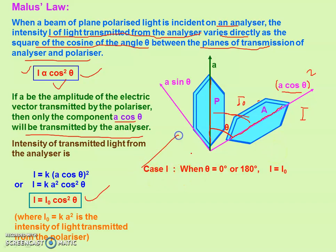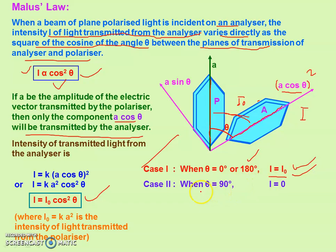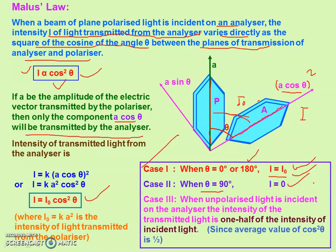If theta is 0°, cosθ = 1, so I = I₀. If theta is 180°, cosθ = −1, but (−1)² = 1, so I = I₀ again — meaning when the polarizer and analyzer axes are parallel, the intensity of emergent light is maximum. If theta is 90°, cosθ = 0, so the intensity of emergent light is zero. When unpolarized light is incident on the analyzer, the intensity of transmitted light is one-half of the intensity of the incident light.